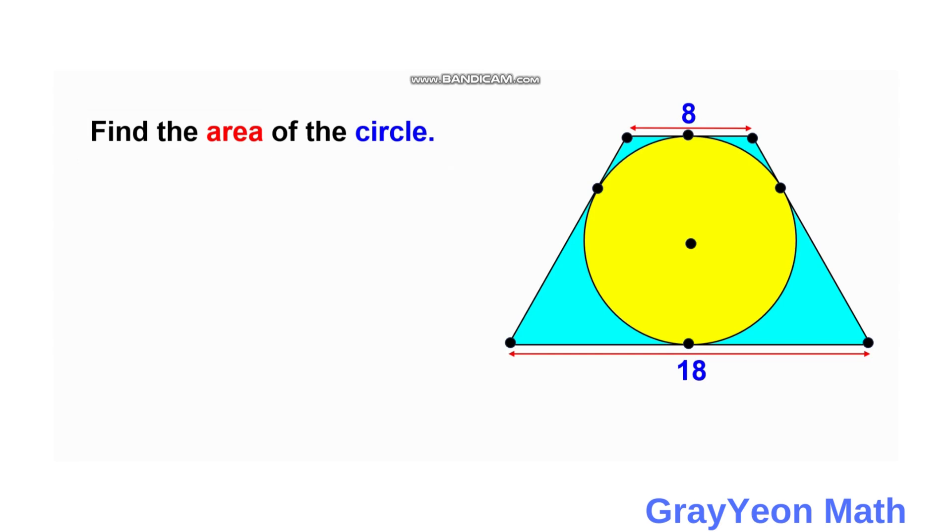First thing that we should notice is that we can actually draw the radius from the points of tangency for this circle. So we can draw from here, this tangent point to the center of the circle, and from this tangent point to the center, and this tangent point to the center to the tangent point at the 18 unit segment.